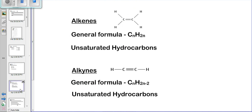Another functional group is the alkenes, which have the double bond. The general formula for alkenes is CₙH₂ₙ, giving us CH₂, C₂H₄, C₃H₆, and so on. They are unsaturated hydrocarbons, meaning these carbons can react by the double bond opening up and other atoms being attached to the chain. Alkynes have the general formula CₙH₂ₙ₋₂. By substituting values of n, we can determine whether a compound is an alkyne, and they are also unsaturated hydrocarbons.